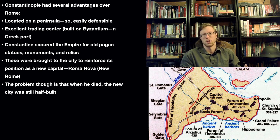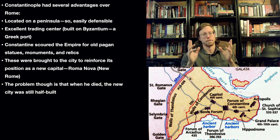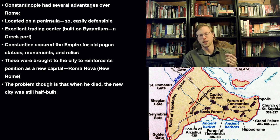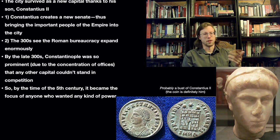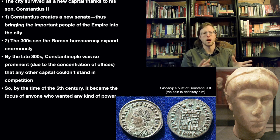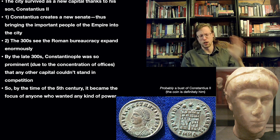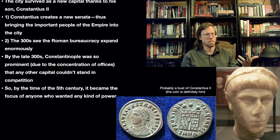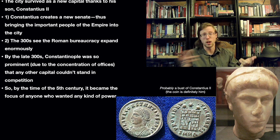The problem is that Constantine dies in 337, and when he dies, the city is half-built. Because it's half-built, the city immediately enters a crisis. It's not unusual for emperors to build a new capital — people did it quite often, especially in late antiquity, as Rome lost its central importance. The problem is: if the emperor dies, what stops the next guy from building a new capital instead?